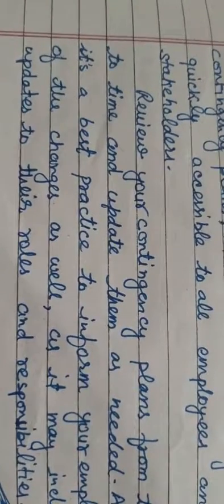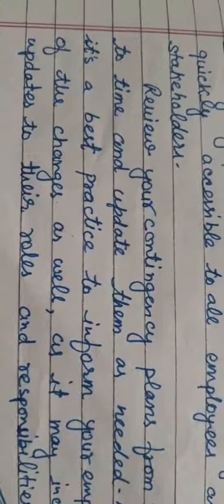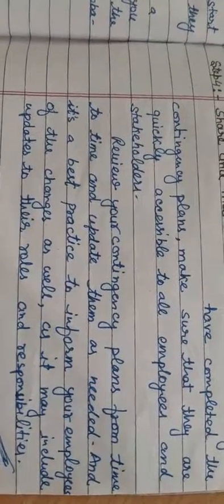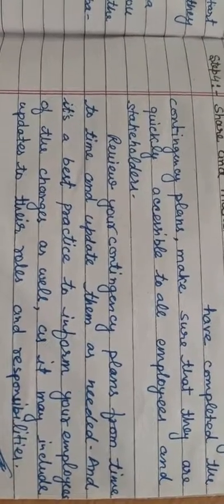So in today's video lecture, that's all. This was your last topic of the syllabus, and from tomorrow's video lecture we will start revision from the first unit. Students, remember these four steps: first, list down the key risks; second, prioritize the risks based on their impact; third, create a contingency plan for each event; and fourth, share and maintain the plan. I hope this topic is well understood. If you have any doubts, you can contact me. Thank you, students.